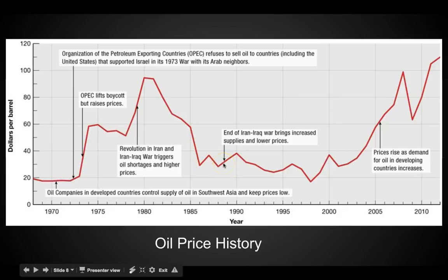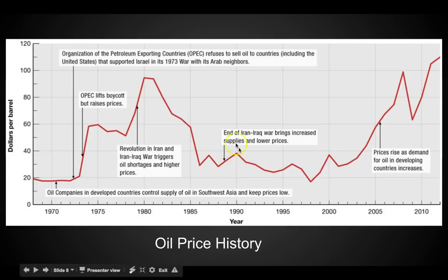Fast forward, coming close to the 90s: the end of the Iran-Iraq war brought increased supplies and lower prices. Gas came way back down in the early 90s — it was great going into college. But as we get into 2005 and beyond, we see prices rise as demand for oil in developing countries increases. We've got more and more people and more industry in development, gas continuing to go up. Prices are going to increase because we need more and OPEC countries know this — they'll limit the supply and charge more.